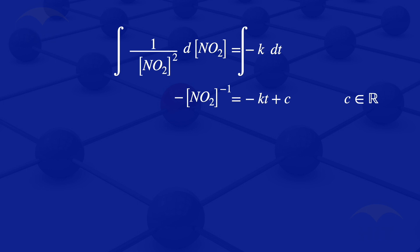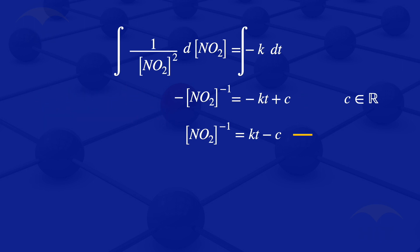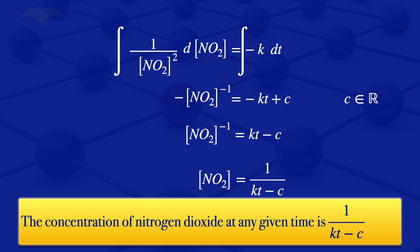What we want is a formula for the concentration of nitrogen dioxide, so we make [NO₂] the subject of the formula. Multiplying through by minus 1, the concentration of nitrogen dioxide to the power minus 1 equals KT minus C. Inverting both sides, the concentration of nitrogen dioxide equals 1 divided by KT minus C. This gives the concentration of nitrogen dioxide at any given time, where K is a constant, C is a constant of integration, and T is time.